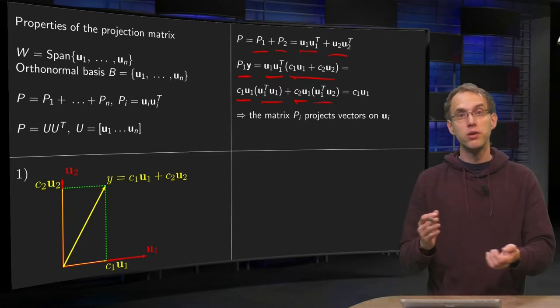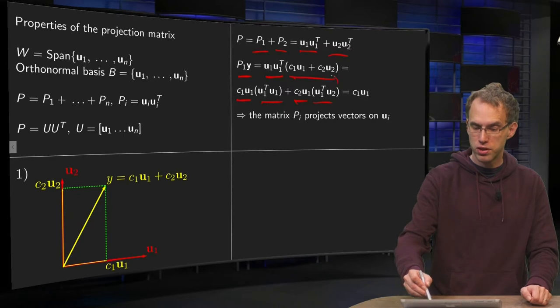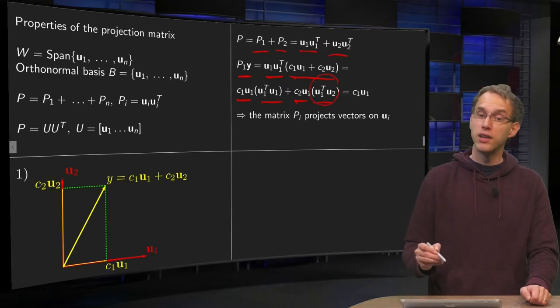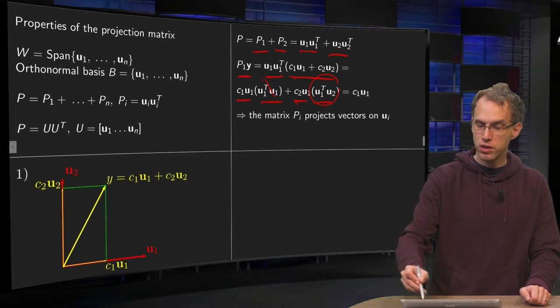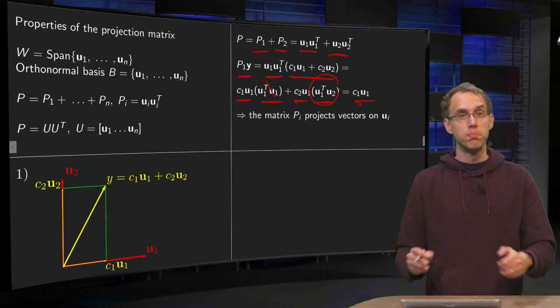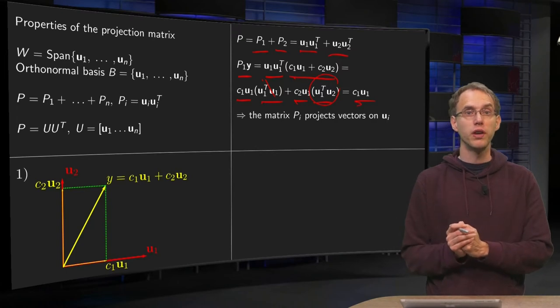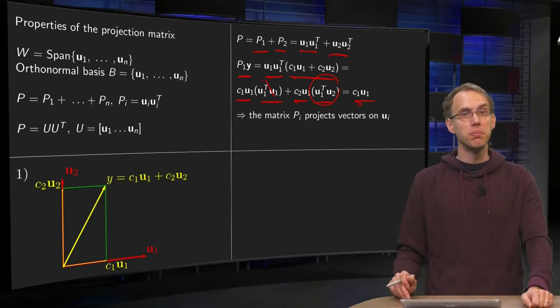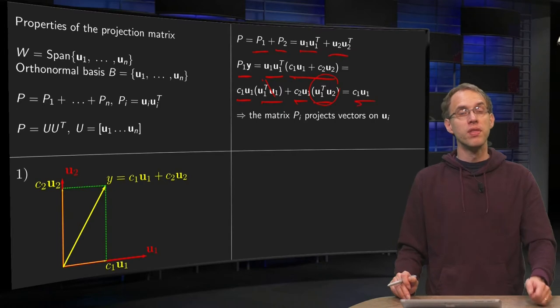Now, U1 and U2 are orthogonal, so this term cancels out. And U1 is normalized, so this term equals 1. You are left with C1U1. What does P1 do? It projects onto U1. What does P2 do? It projects onto U2.